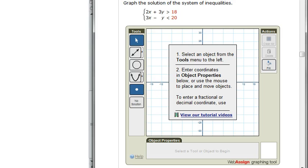Here we are to graph a system of inequalities: 2x plus 3y greater than 18 and 3x minus y less than 20.